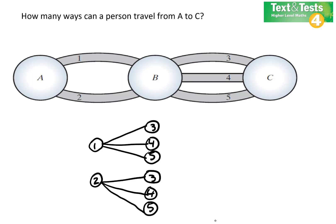So you could have 1 and 3, 1 and 4, 1 and 5, 2 and 3, 2 and 4, and 2 and 5.